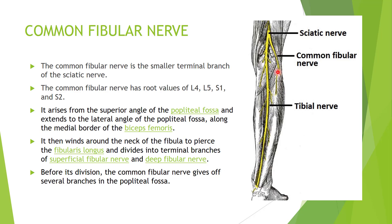The common peroneal nerve divides into terminal branches: the deep peroneal nerve and the superficial peroneal nerve. Before division, it gives off several branches in the popliteal fossa, but the common peroneal nerve itself supplies only one muscle — the short head of the biceps femoris. All other muscles are supplied by its branches. The deep peroneal nerve supplies the anterior compartment of the leg, and the superficial peroneal nerve supplies the lateral compartment.